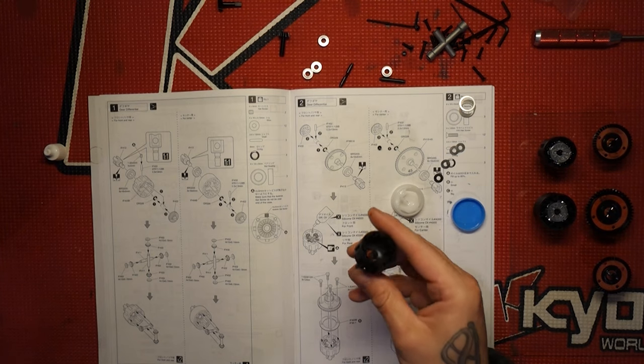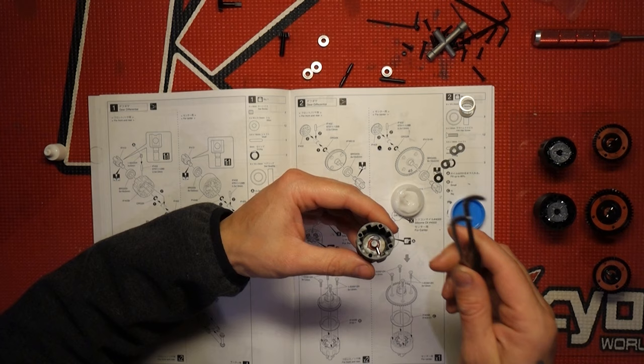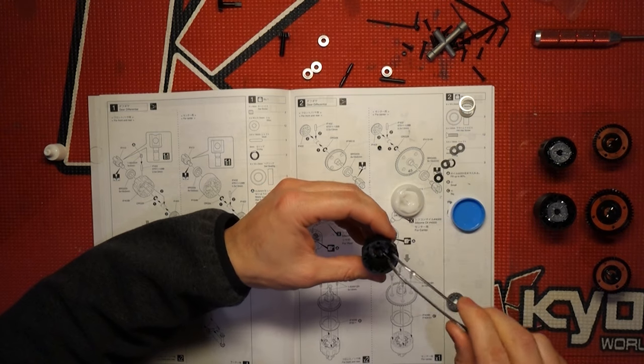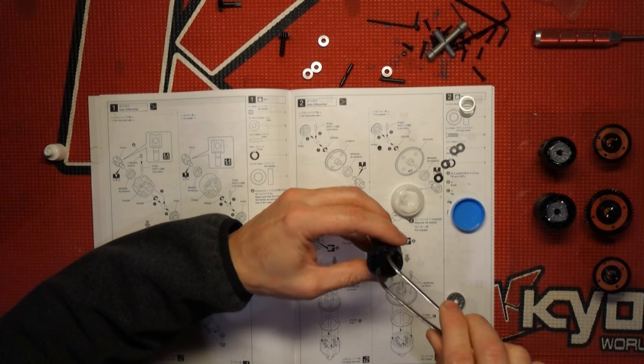Just kind of try to line it up the best I can. And once you sit it in there, it's not going to fall down in there if you've got grease on it. The grease will kind of hold it in place. And you just want to grab some tweezers and kind of line it up and just slide it into place.